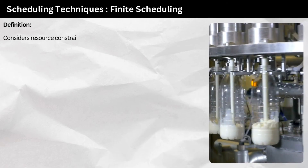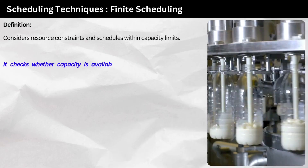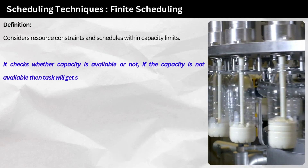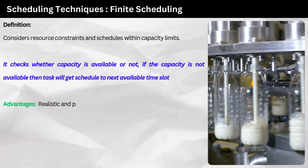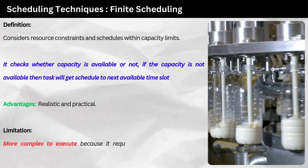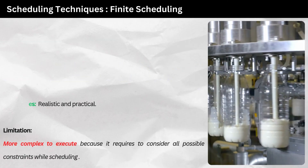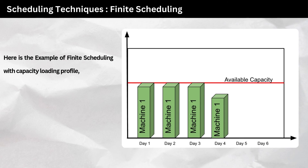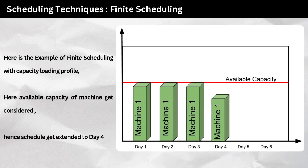Finite scheduling — definition: considers resource constraints and schedules within capacity limits. It checks whether capacity is available; if not, the task gets scheduled to the next available time slot. Advantage: realistic and practical. Limitation: more complex to execute, as it requires considering all possible constraints. The example of finite scheduling with a capacity loading profile shows that available machine capacity is considered, and hence the schedule gets extended to day 4.